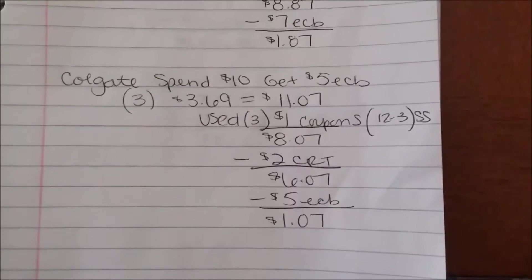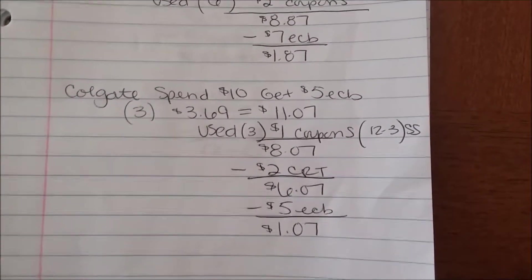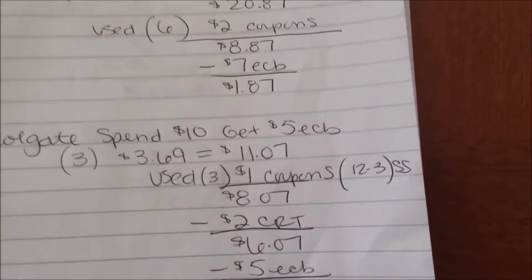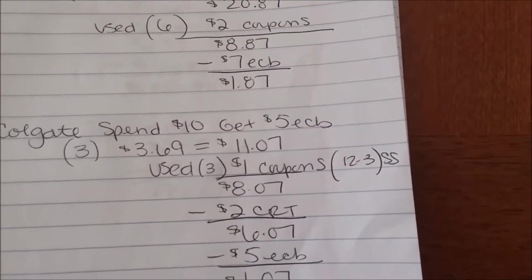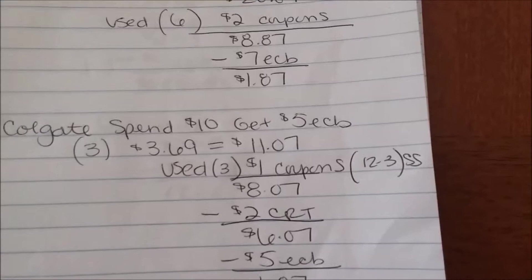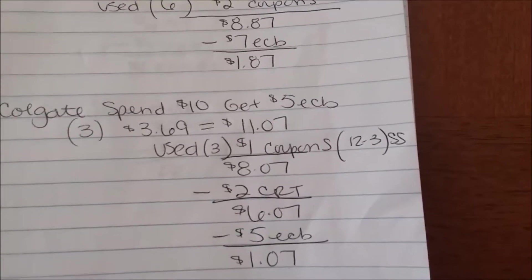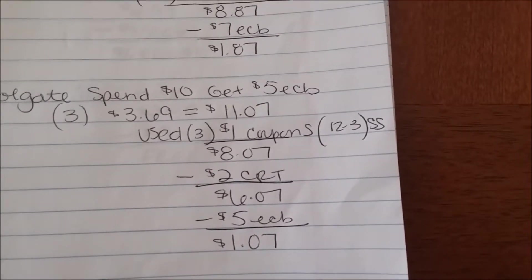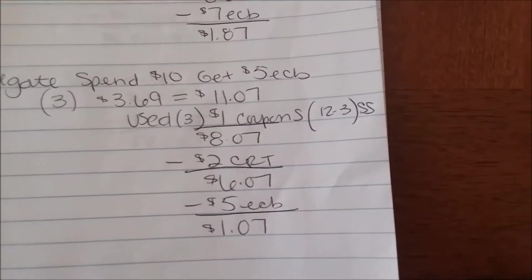Moving along, the Colgate is spend 10 get five. I bought three of them for $3.69 which brought it to $11.07. I used three $1 coupons from the 12/3 SmartSource, brought it down to $8.07. I had a $2 CRT for $2 off two Colgate toothpaste which brought it down to $6.07. After getting back my $5 ECB I paid $1.07 for all three of those right there.